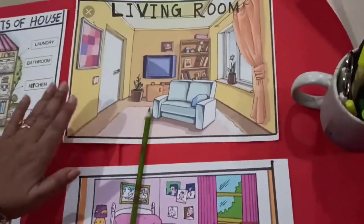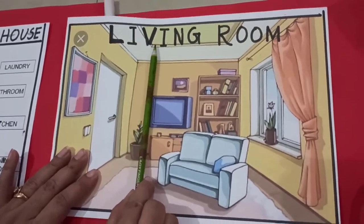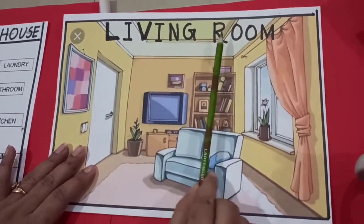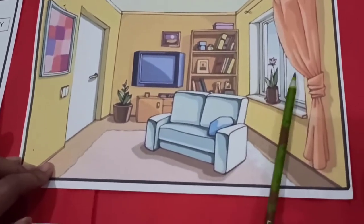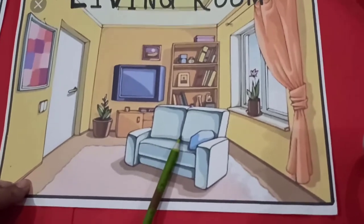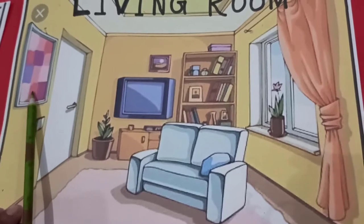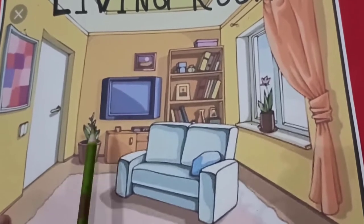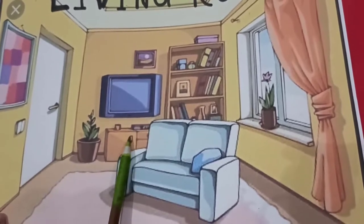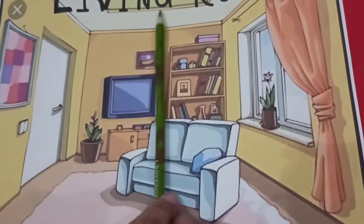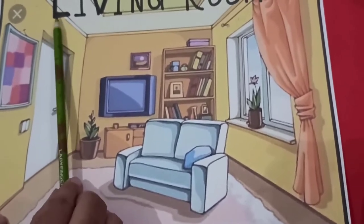See, which room is this? Yes, this is the living room — L-I-V-I-N-G, living, R-O-O-M, room. What can you see in the living room? See: one sofa, TV, a photo frame or painting, cupboard, flower vase, flower pot, and a small table. All of these things you can see in the living room. This is also called a drawing room.